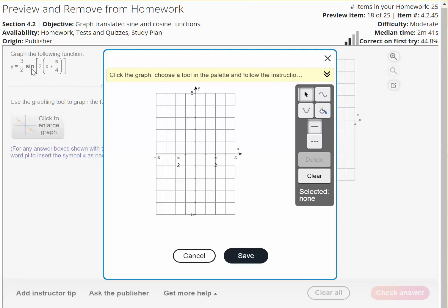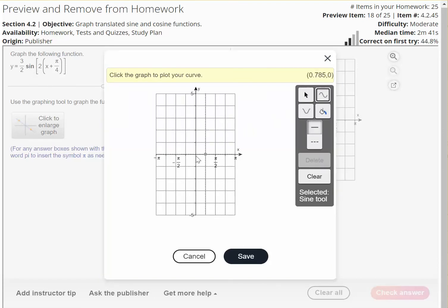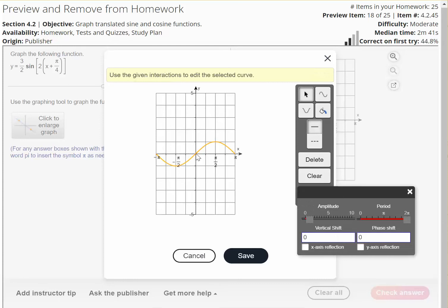So first of all, this is a sine curve. So let's go ahead and click here. Sine curves start at 0, 0. Now, let's see, the amplitude here, or A, or the absolute value of A is 3 over 2, or 1.5. So let's go ahead and put that in.